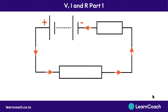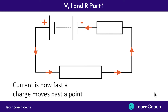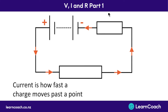Current is how fast each of these charges are moving around the circuit. If the charges are moving really fast, lots and lots of energy is going to be delivered to each of these resistors — that's what these boxes are here. So both how fast the charges are moving past a point, and how much energy they have, will both contribute to how much energy they give to each of these little resistor blocks.